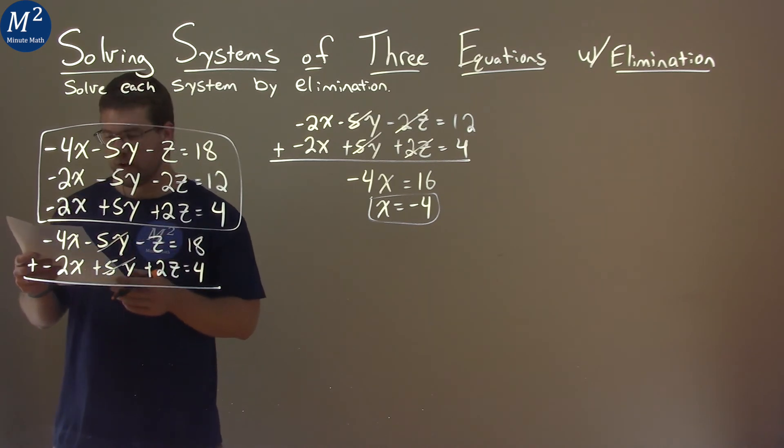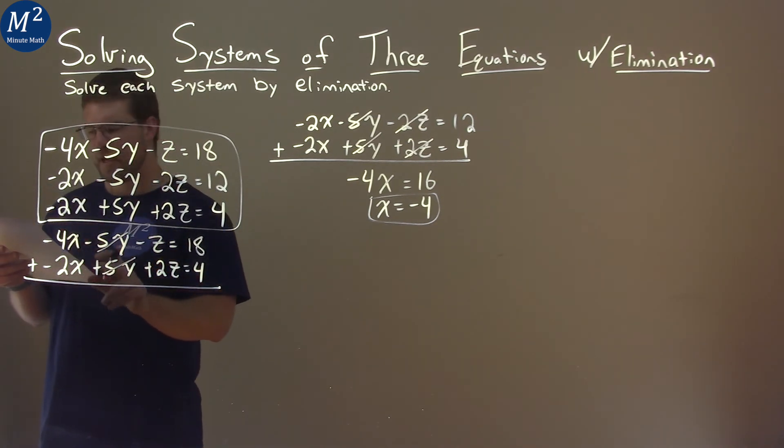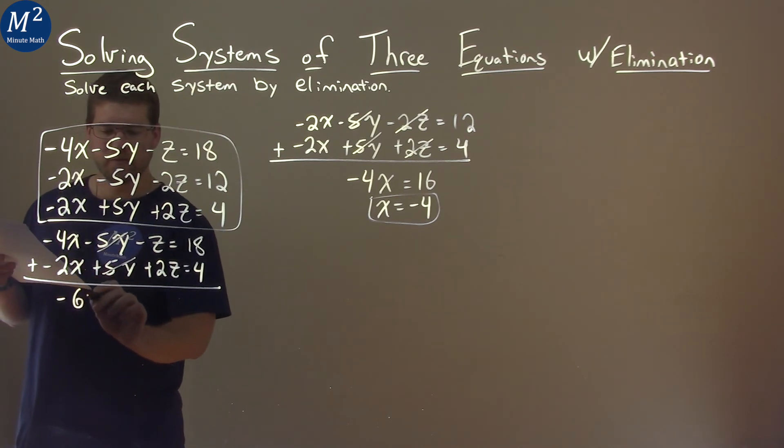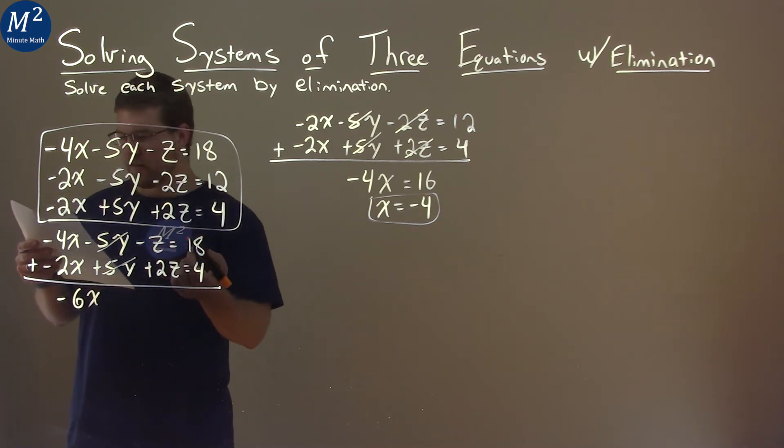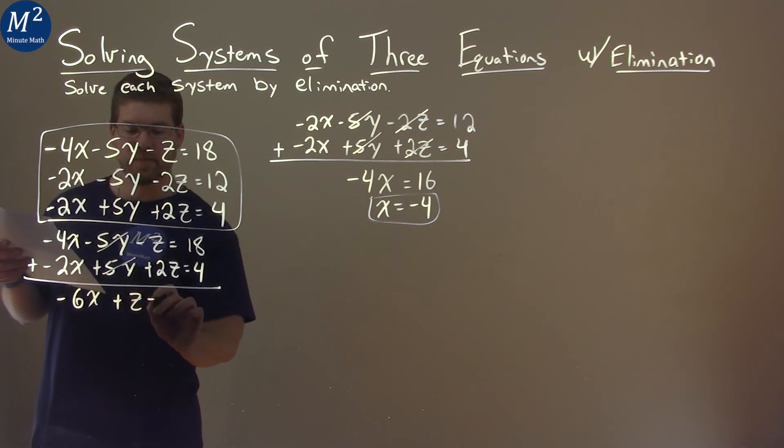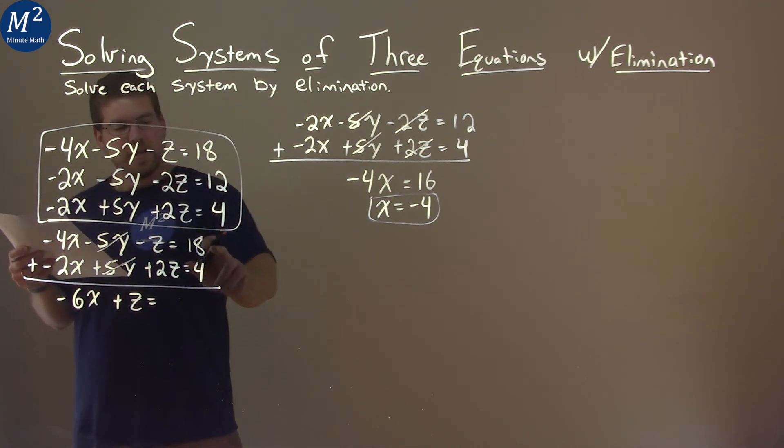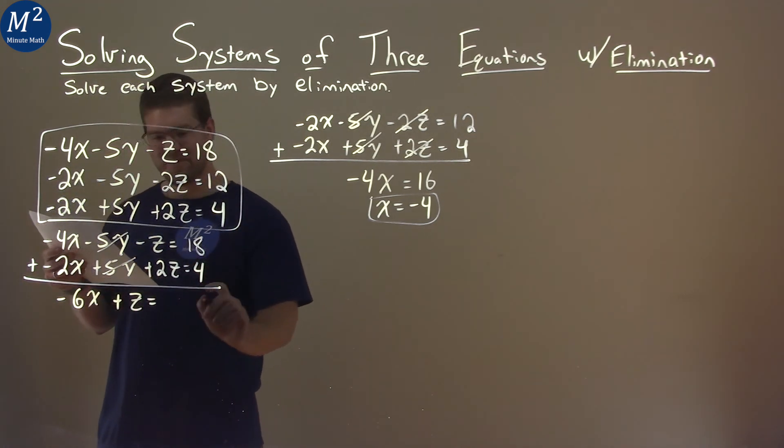So negative 5y and positive 5y, but not much else. So if we add it, negative 4x and negative 2x is negative 6x. And then negative z plus 2z is plus 1z. 18 plus 4 is 22.